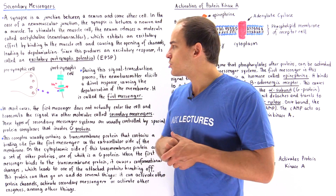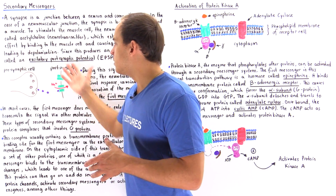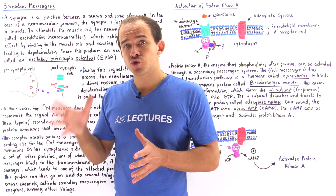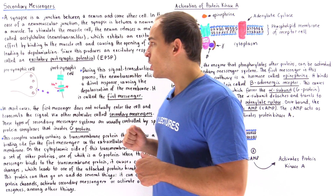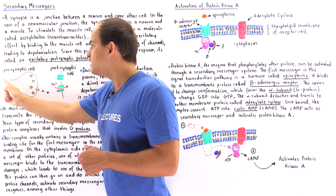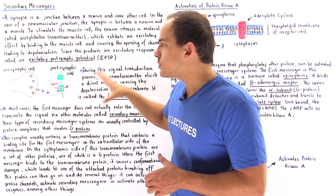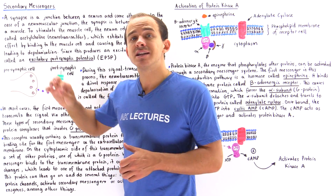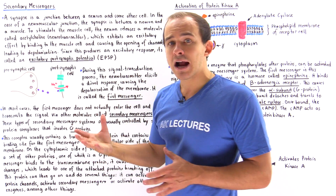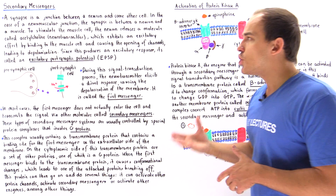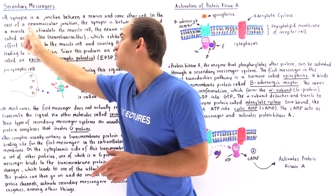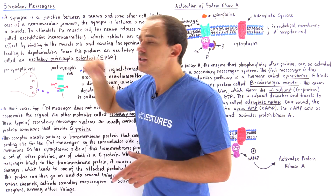How exactly does this take place? Let's recap with the following diagram. Basically, the action potential travels down the axon of the neuron to the axon terminal of the presynaptic neuron. Once the action potential arrives, it indirectly causes the release of synaptic vesicles that carry a special chemical — a neurotransmitter. The specific neurotransmitter at the neuromuscular junction is acetylcholine.